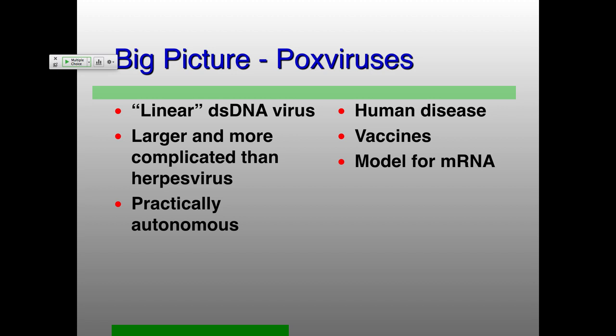A question about the dependoviruses versus autonomous parvoviruses: how do the autonomous parvoviruses finish the cell cycle? So the question is how the autonomous parvoviruses stimulate the cell cycle. The answer is I don't know, but I think it has to do with those NS proteins — the non-structural proteins — though I'm not completely clear on that, and I'm not absolutely certain it's well known either.